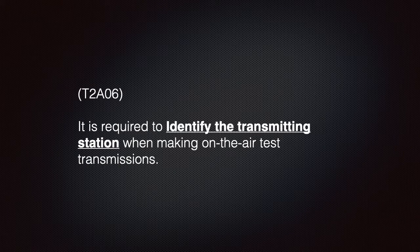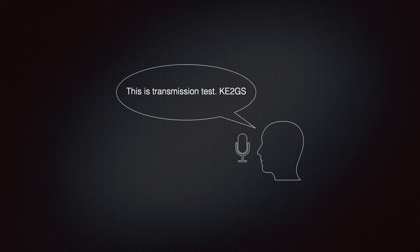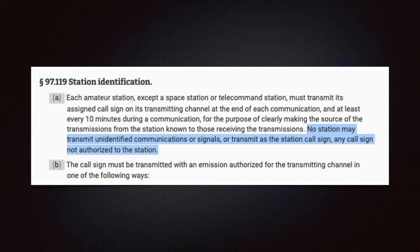We need to know that it is required to identify the transmitting station when making on-the-air test transmissions. Part 97.119, station identification, states that no station may transmit unidentified communications or signals, or transmit as the station call sign any call sign not authorized to the station.